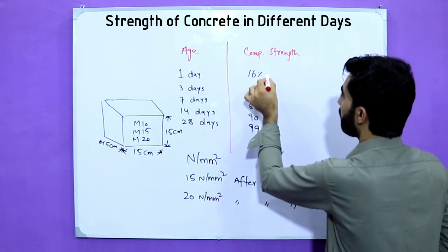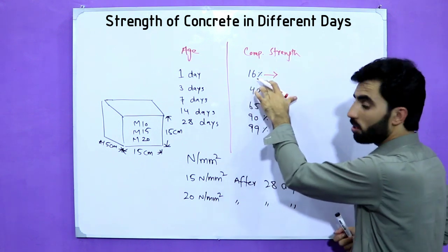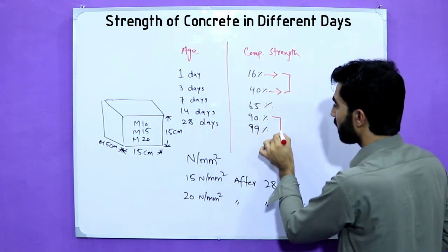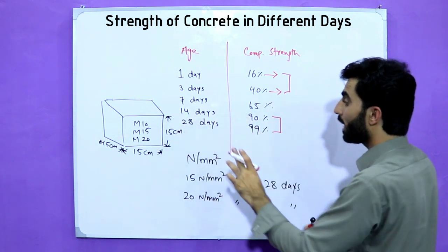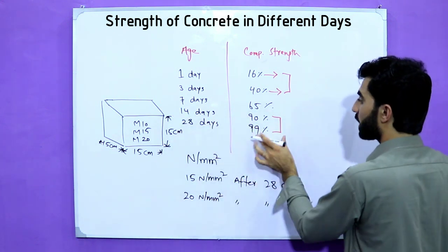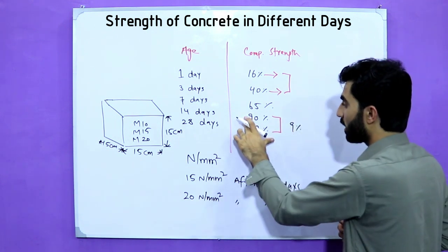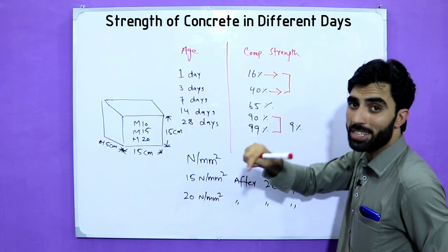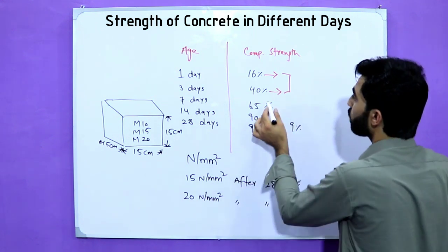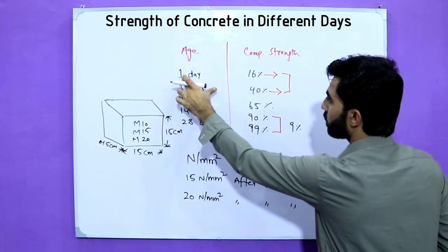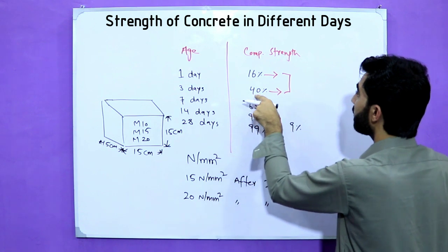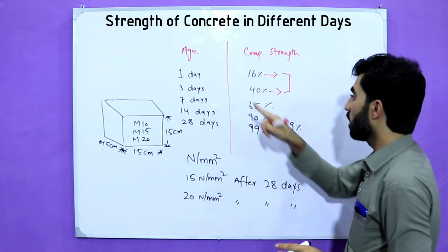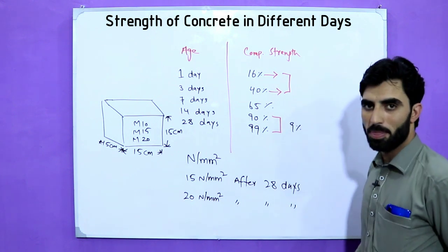Concrete gains strength rapidly in initial days. From day 1 to day 3, it goes from 16% to 40%. But from day 14 to day 28 — a span of 14 days — it gains only 9% more strength, going from 90% to 99%. This clearly shows that most strength development happens early. By day 7, concrete already reaches 65% of its final strength.